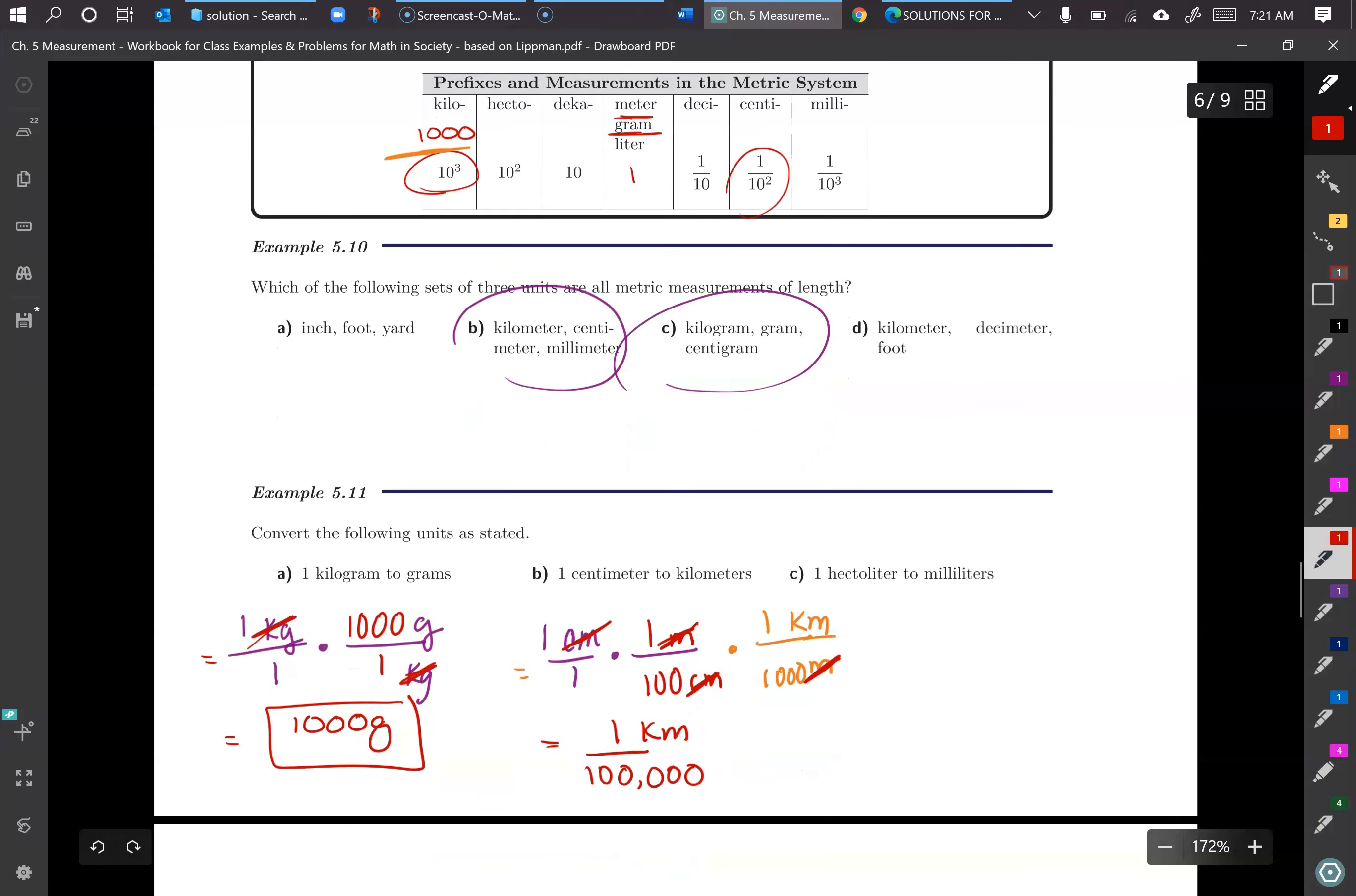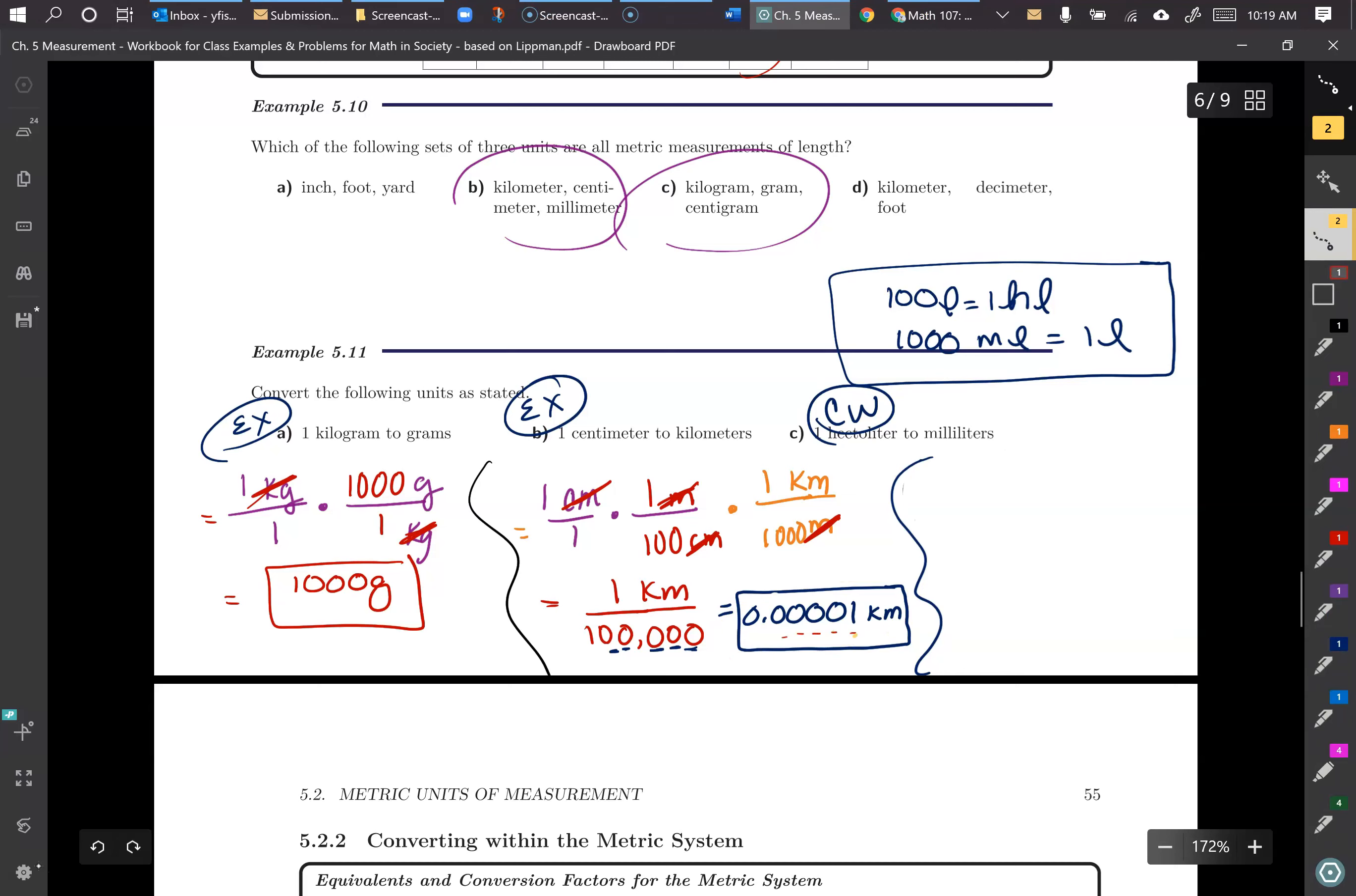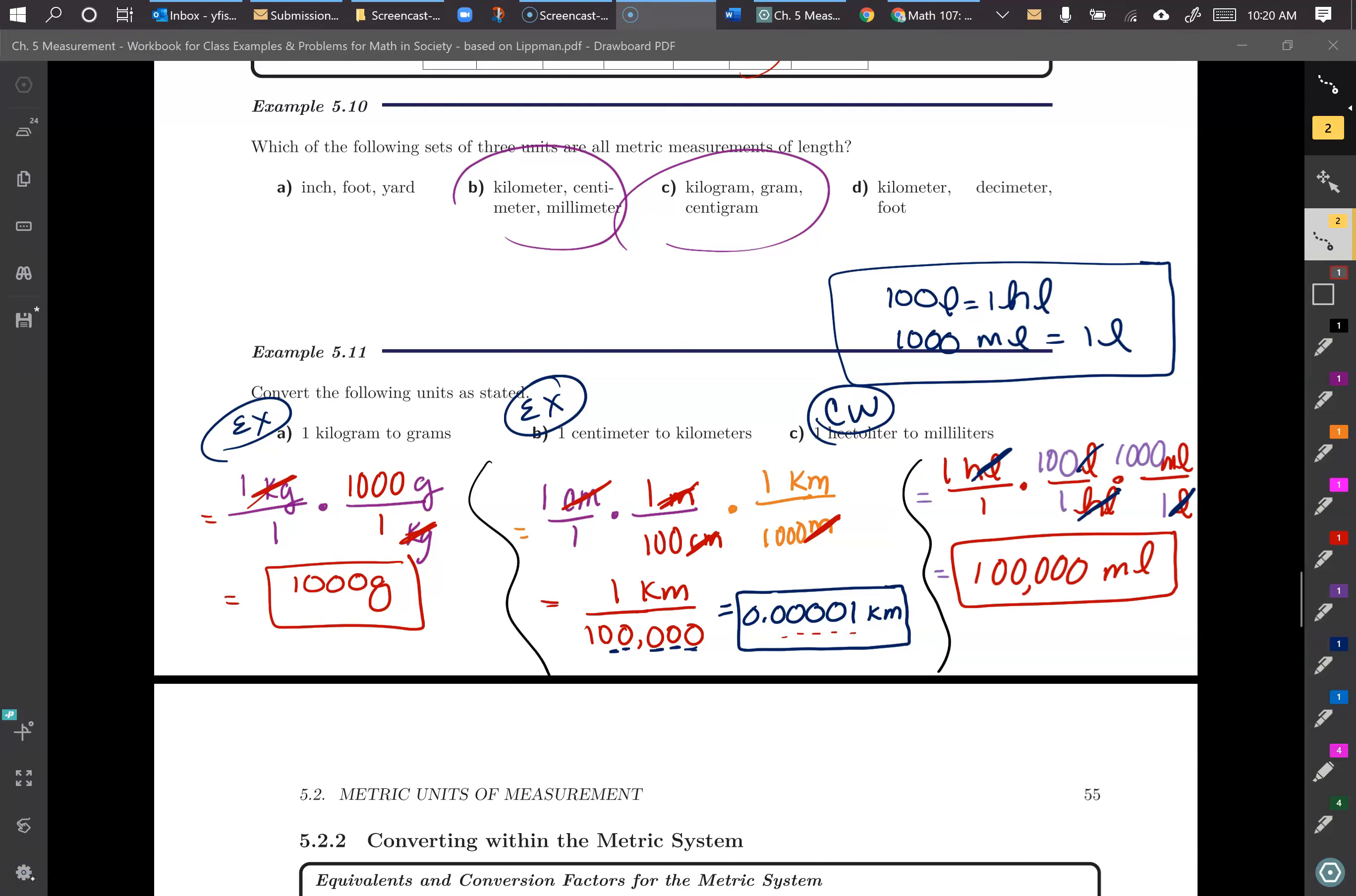And then what I do is make sure all my units on the diagonal cross out like I want them to. And then I multiply across the top, I'll have one kilometer over a hundred times a thousand. So that's going to be a hundred thousand kilometers. And if I actually divide that out, we have 0.000001 kilometers once you divide that out. For the next problem, part C, try that one as a class work. That is one hectoliter to milliliters. And here are the conversions that you need to do to set up your dimensional analysis. So pause the video and do that. And here's the answer for that one. It should be a hundred thousand milliliters.